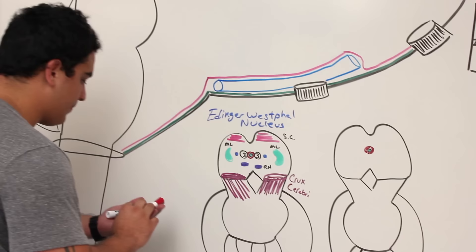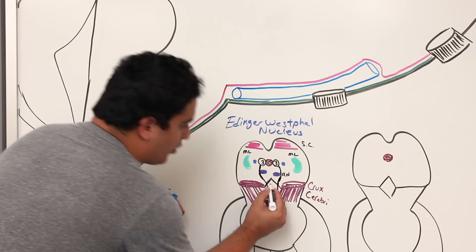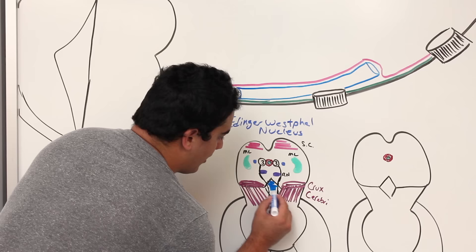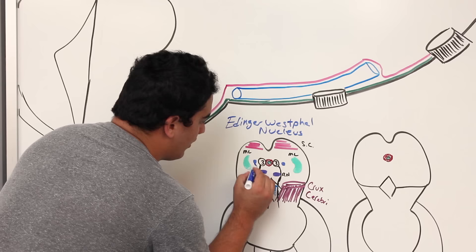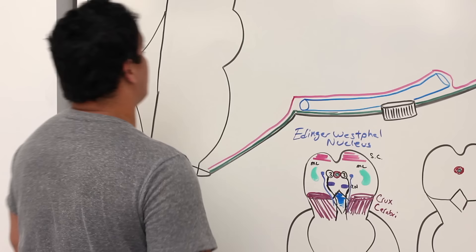The third nerve fibers may pass through the red nucleus and then move out through the interpeduncular fossa — a cerebrospinal fluid-filled cavity in the center. The parasympathetic fibers also exit with the somatomotor fibers at this point. So we know exactly how the nerve exits from the brainstem into the peripheral nervous system.